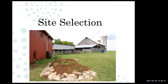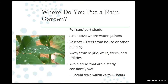Site selection is a really critical part. You typically want a full sun or part shade location. There are options for shade gardens, but if you're looking for flowering plants, full sun or part shade areas are the best suited. There are some plant options for part shade, but you're limited to a smaller number of plants in the shade.